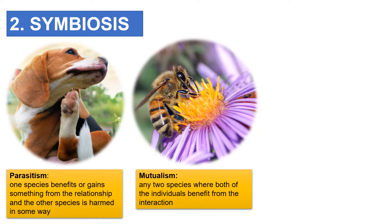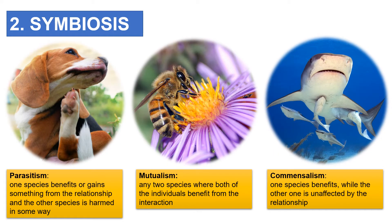Mutualism occurs between any two species where both individuals benefit from the interaction. Both species gain something from the other, so we can say it is mutually beneficial. In commensalism, one species benefits while the other is unaffected by the relationship. Unlike parasitism, in commensalism the other species is not harmed or benefited in any way. A whale shark with remora fish is an example — the remora fish get scraps of food that fall out of the shark's mouth, and the whale shark is unaffected.